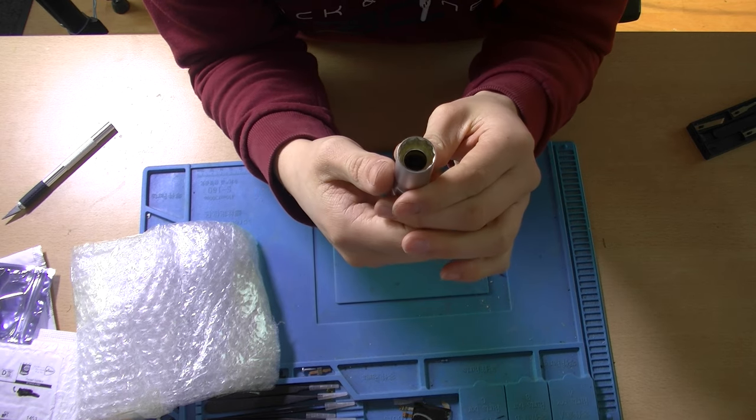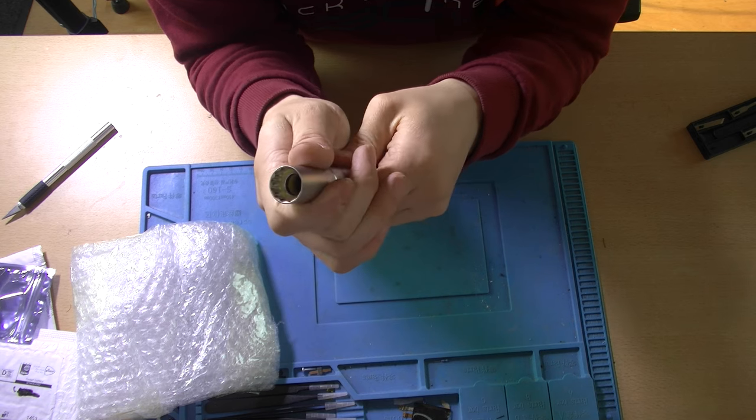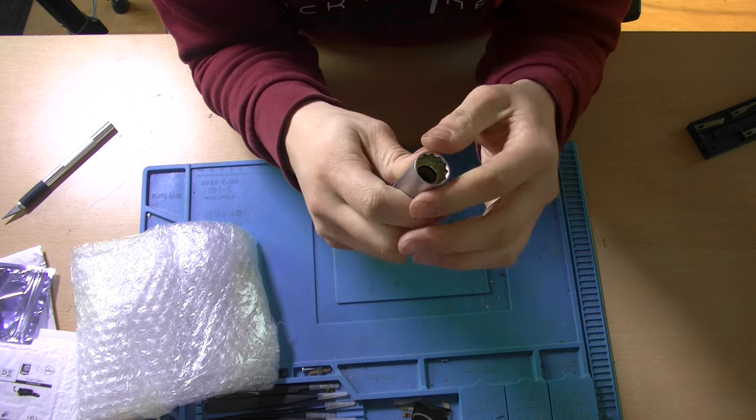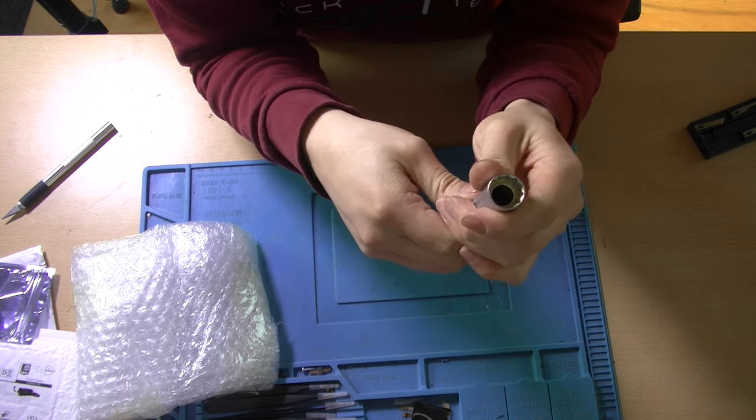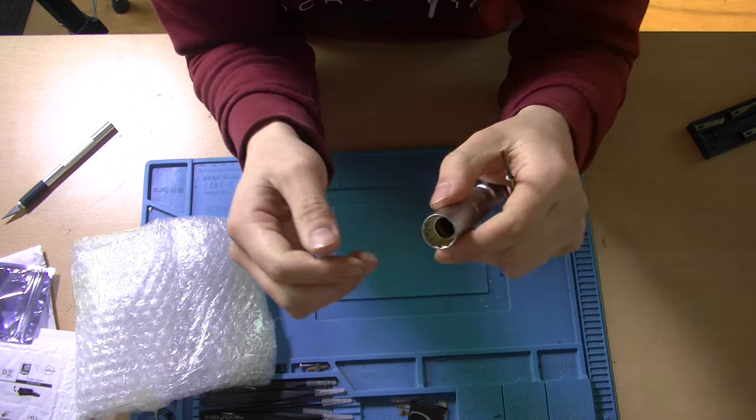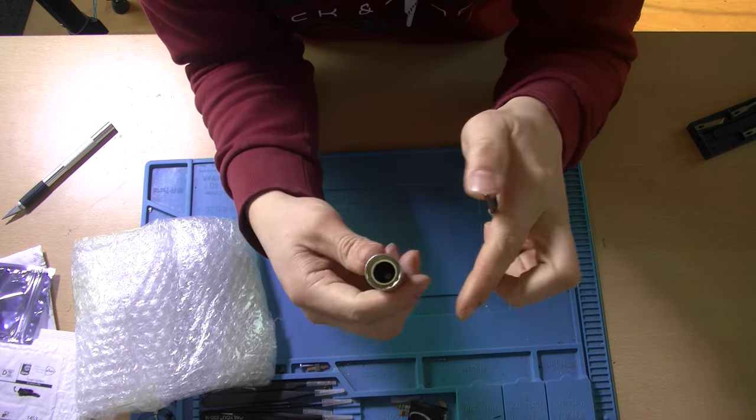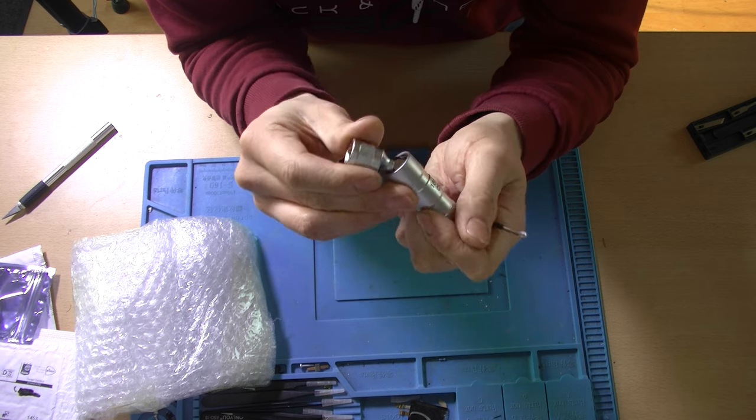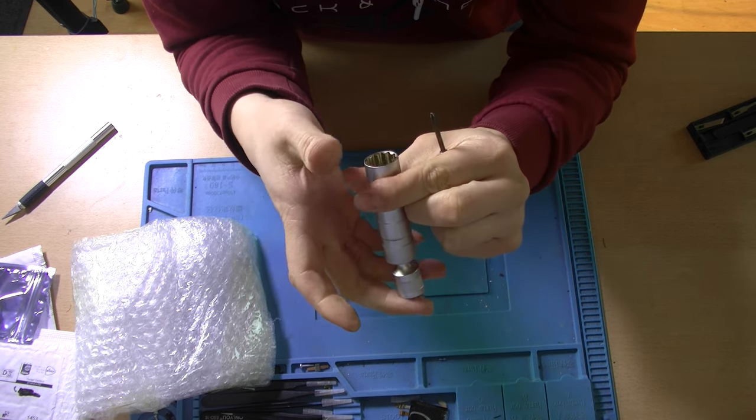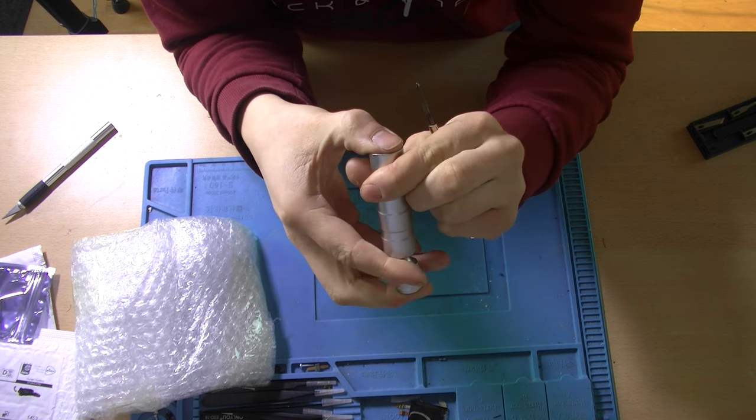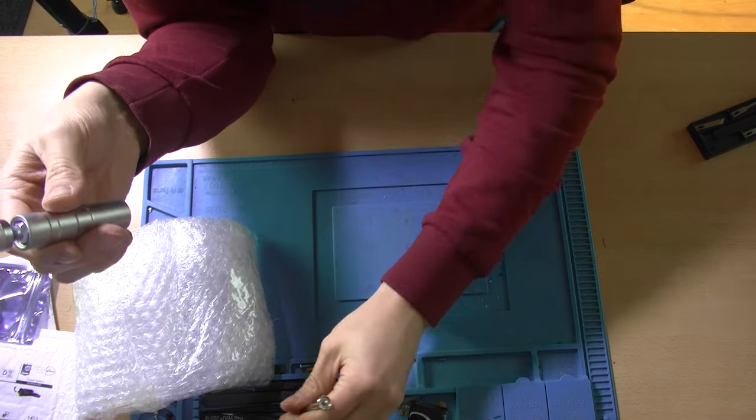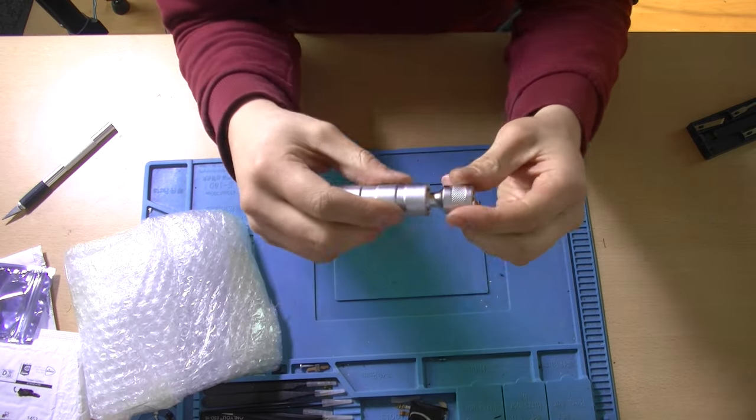This socket is supposed to attach to the spark plug so you can just pull it out without having to fiddle around with your hands or with a set of tweezers. This is the magnetic ring that you can see here on the inside. I'm really looking forward to see how this works on my car. As it has 24 spark plugs, I think this is a more than welcome addition to my toolkit.